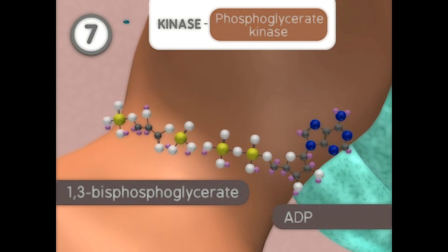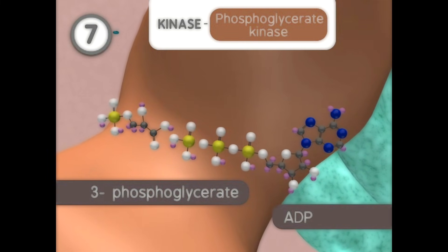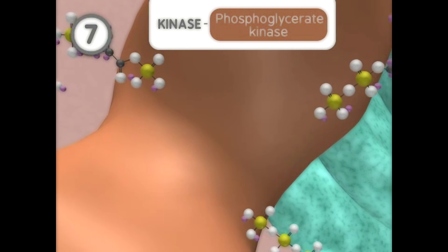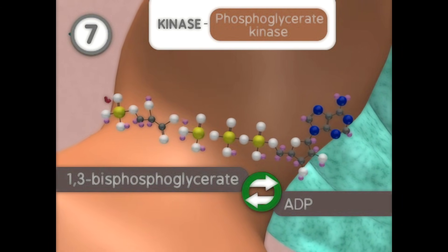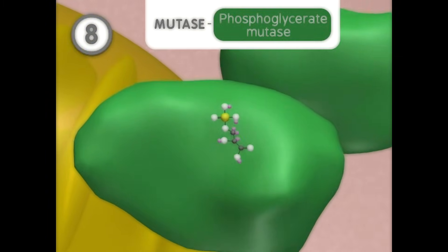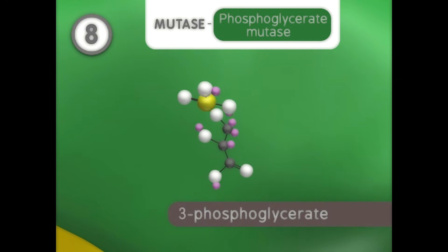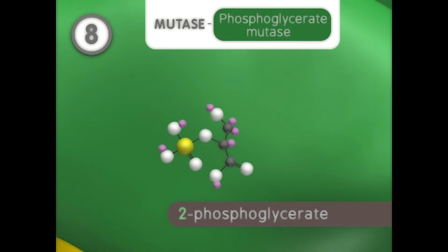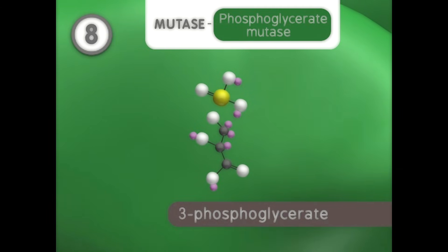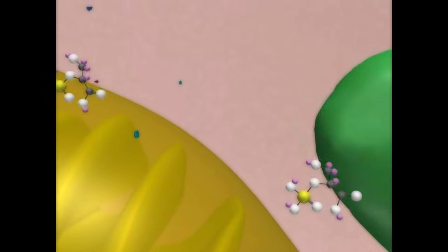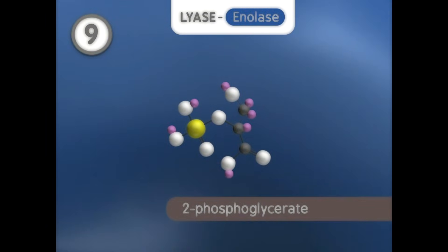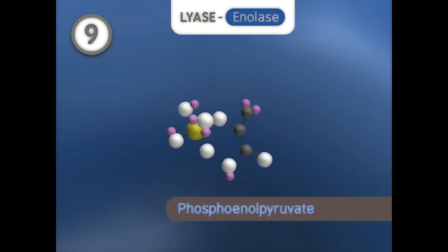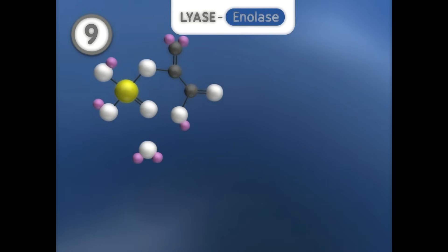In step 7, a kinase transfers a phosphate from 1,3-bisphosphoglycerate to ADP to form ATP and 3-phosphoglycerate. This step is reversible even though ATP is formed. The next step involves a mutase reaction that moves the phosphate on the third carbon of 3-phosphoglycerate to the second carbon position to form 2-phosphoglycerate.